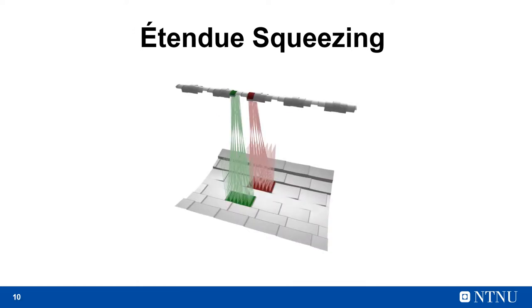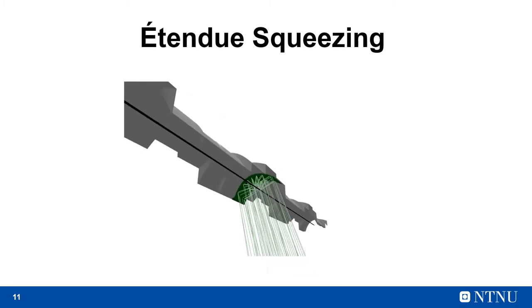To further increase this concentration, we can increase the number of concentrators that all concentrate to the same receiver. Here is an example of a design with six such concentrators. And in the same way, each segment from the primary reflector redirects light to its own segment in the secondary reflector, while they all redirect to the same tubular receiver.